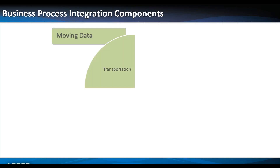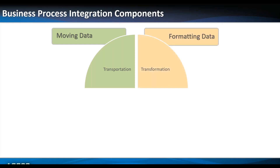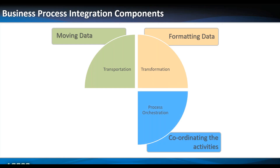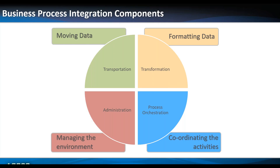When we look at business process integration, there are four main areas to address. First, getting the data — how do we move it from point A to point B, whether internal or external. Second, once we have the data, how do we make it useful, or put it in the right format for trading partners? Third, how do we bring it all together? Traditionally this has been a programming exercise, but we need process orchestration to coordinate those activities. Finally, how do we administer it — control user access, handle errors, and send alerts? All four are addressed via LANSA Composer.